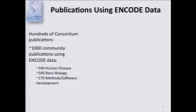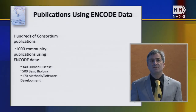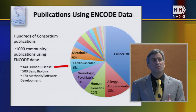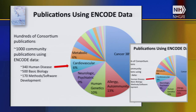The main accomplishment I'd like to emphasize is publications. There are hundreds of publications from the consortium, but most importantly the data are being widely used by the community. We've tracked at least 1,000 publications from the community that actually contain ENCODE data — not just citations of ENCODE, which is a far larger number. These publications span a wide range of topics: human disease, basic biology, and methods development and software. Fully one-third are in human disease, emphasizing the translational value of the project, spanning a wide range of diseases funded across NIH institutes including NHGRI.